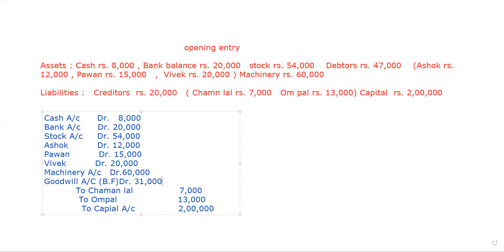In this way, our opening entry is completed. Now, the question may arise in students' minds: sometimes the debit side total can be more than the credit side. If the total of the debit is more, the balancing figure is to be shown on the credit side as a capital reserve. Please keep this in mind — this is how the opening entry is done.